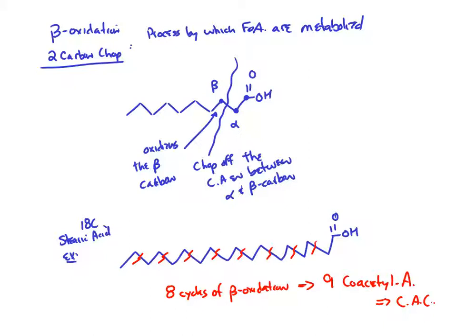As a brief review: saliva starts the breakdown of glucose and carbohydrates, stomach acid primarily breaks down proteins, and fatty acids tend to be digested in the small intestines where they're hydrolyzed into the various fats, and then we add bile salts and things like that.